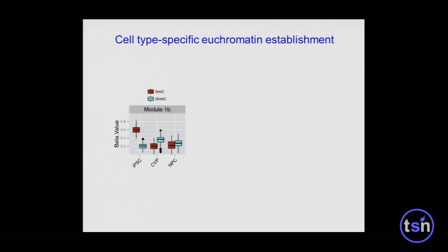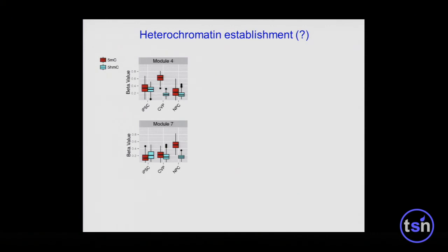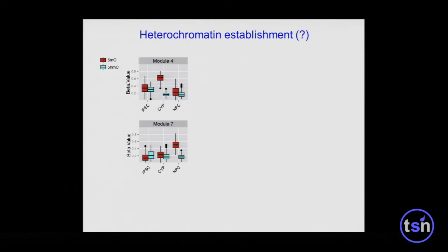I want to point out a couple of the more interesting modules. In Module 1B, we see a dramatic reduction of 5-methylcytosine when we differentiate to both types of progenitors. However, we see low levels of 5-hydroxymethylcytosine in iPS cells and a very significant increase when we differentiate to cardiovascular progenitors, but not to neural progenitors. This appears to be the establishment of euchromatin in the cardiovascular progenitor lineage, as most of the genes associated with these regulated cytosines are involved in heart processes, heart morphogenesis, and cardiac muscle cell development.